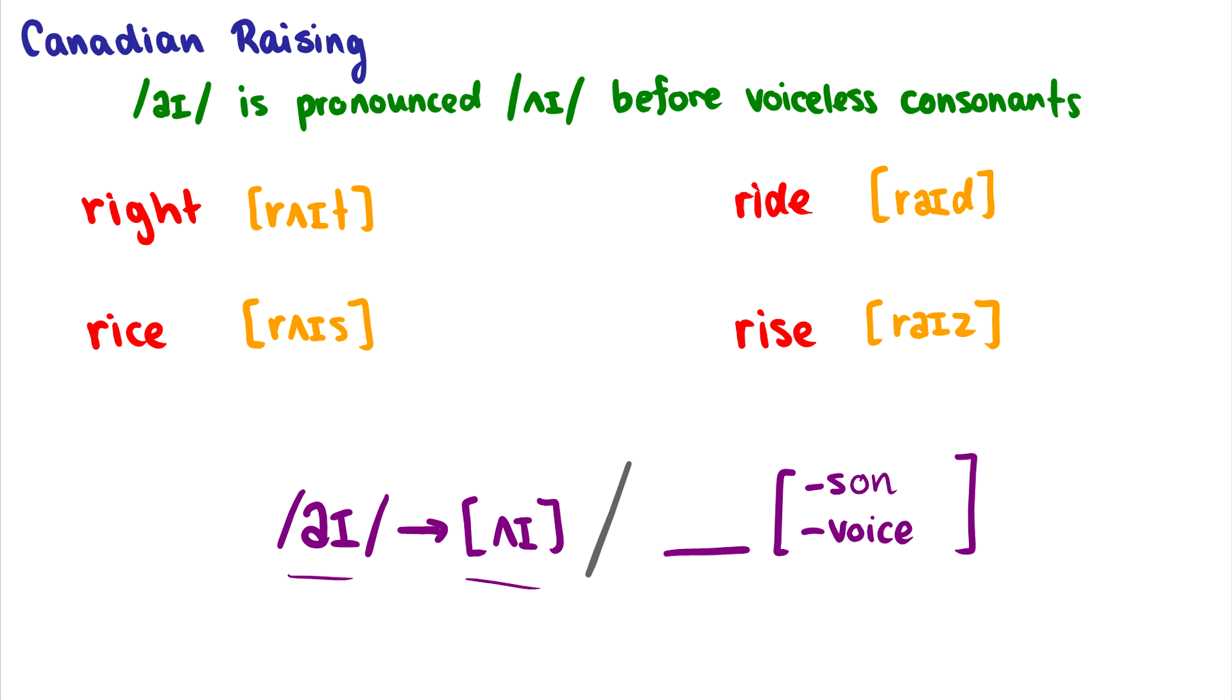So in the example with right, well, this t is minus sonorant minus voice. Therefore, instead of having an I here, it gets raised. While with the word ride, well, this is a d here. This has plus voice. So this isn't part of our rules condition. Therefore, there is no change. And this is just realized as the regular I in ride.